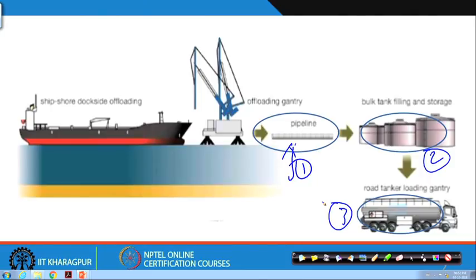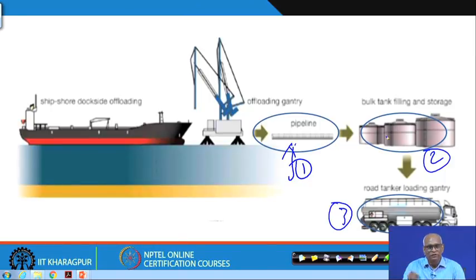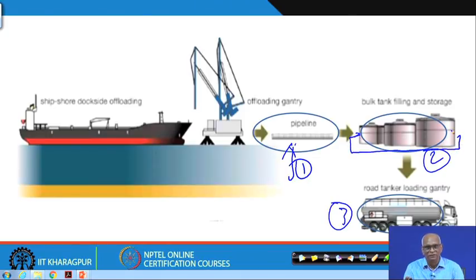We may select many more scenarios, but for the case study purpose we have selected these three as the major hazards. The hazards of the pipeline where hazardous material is being carried, hazards in the bulk tank where hazardous material is stored. If any breakdown happens and material comes out, we have a bund so that the hazardous materials will not go to the environment.